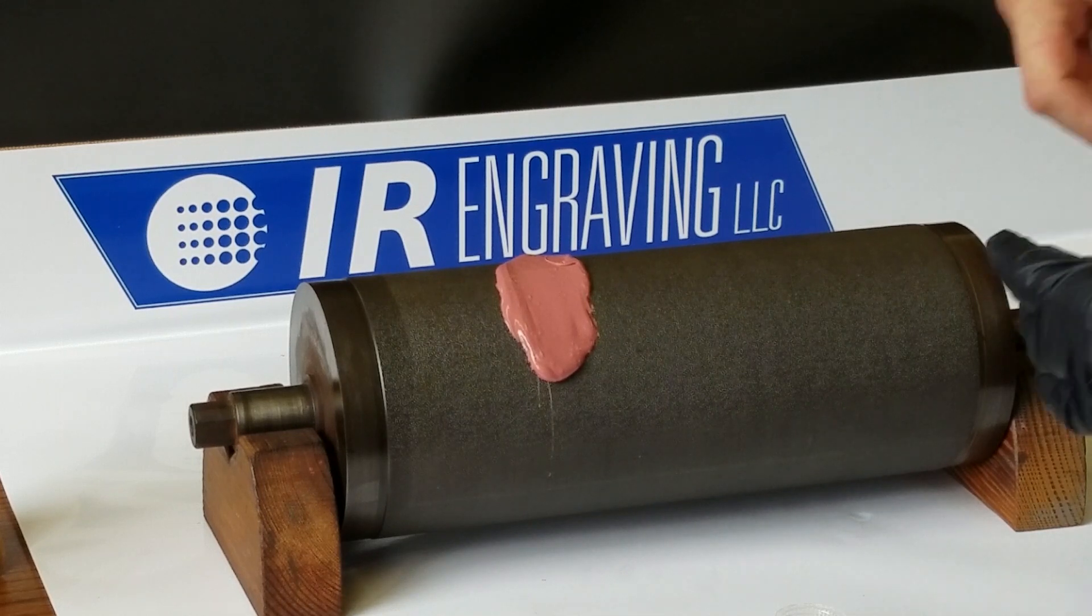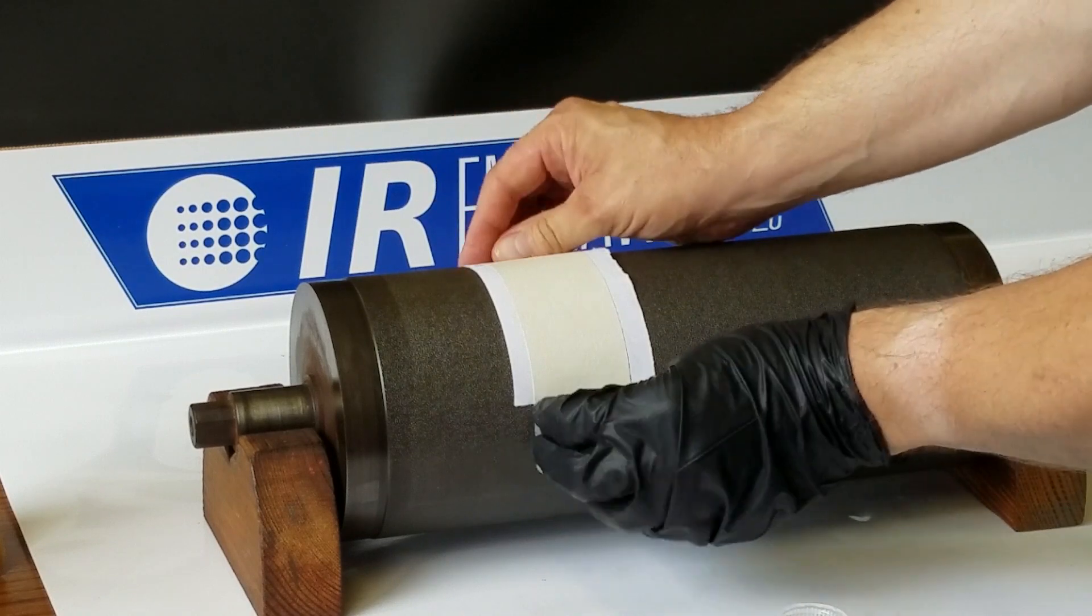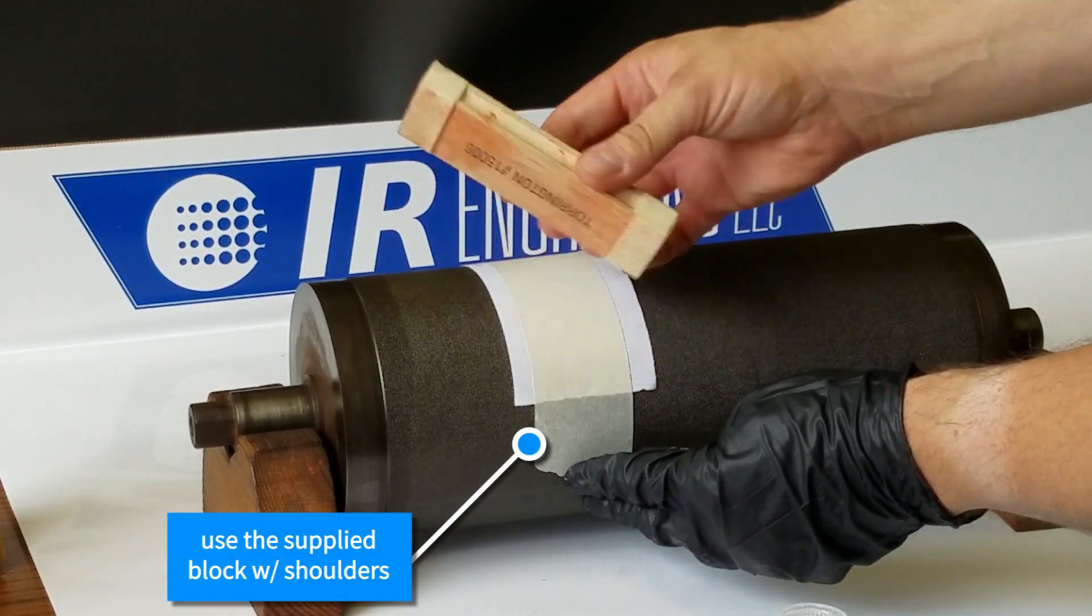Place the piece of paper on the silicone and smooth over the surface, maintaining a measure of overall thickness. A block of wood or similar is helpful.